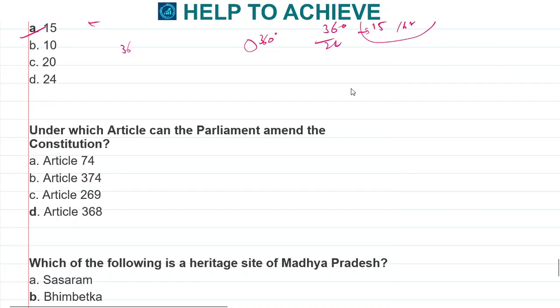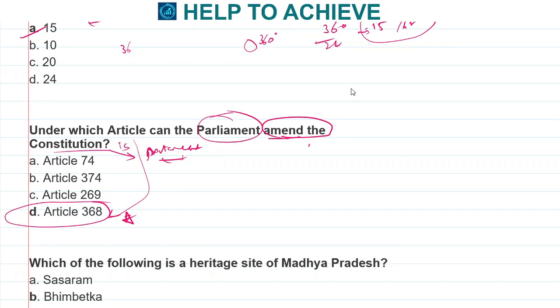We all know the Constitution can be amended. The Parliament, in Lok Sabha and Rajya Sabha, amends the Constitution many times. Under which article can this be done? The article that gives power to amend is Article 368. Amend the Constitution means we can add or modify some changes in the Constitution. That is under Article 368.